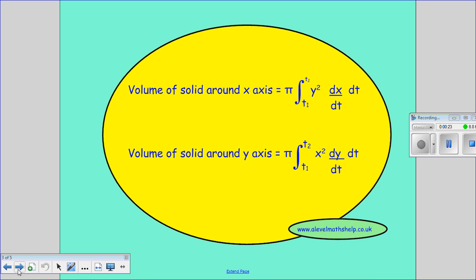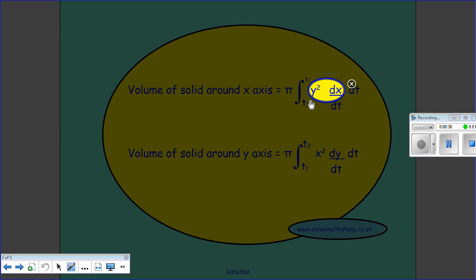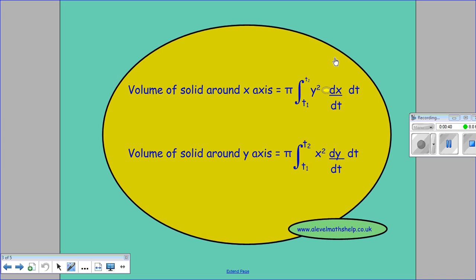The equations for the parametric equations are given here, so the volume of a solid around the x-axis is given by π times the integral between t₁ and t₂ of y² dx/dt dt. If you note, if you cross cancel the dt's you get the y² dx which is the same as you would get if you had the Cartesian form of this formula.